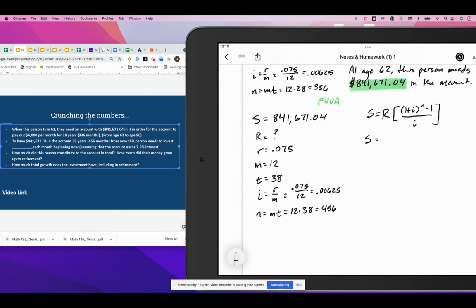So in our formula, we're going to have S, I need to put the number in there, 841,671.04 is equal to R times 1 plus 0.00625 to the power of 456 minus 1 over 0.00625.